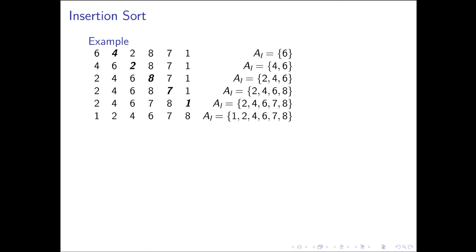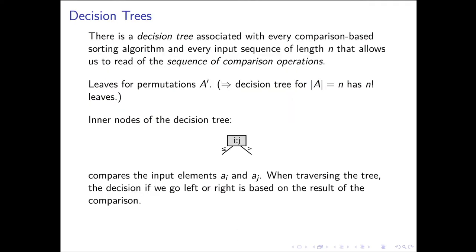As you can see, there are many decisions to make to arrive at the final solution. Quite interestingly, with every comparison-based sorting algorithm, for a given input sequence length n there is a decision tree. We traverse that tree to arrive at the permutation that transforms input sequence A into output sequence A'. Since there are n! permutations of the input, the decision tree has n! leaves — which makes this approach impractical for input lengths higher than about four or five.